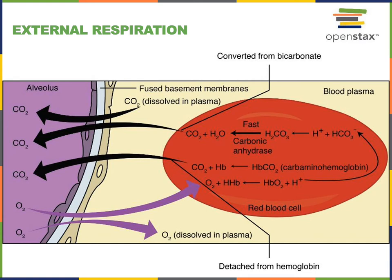External respiration is gas exchange between the blood in the pulmonary capillaries and the air in the lungs within the alveoli. Partial pressure gradients drive simple diffusion of oxygen and carbon dioxide across the respiratory membrane, which is the wall of the alveolus and the wall of the pulmonary capillary held together by a fused basement membrane of loose connective tissue. Oxygen moves from a relatively high partial pressure in the alveolus — around 100 mmHg at sea level — into the blood of the pulmonary capillary where the partial pressure of oxygen is normally around 40 mmHg.